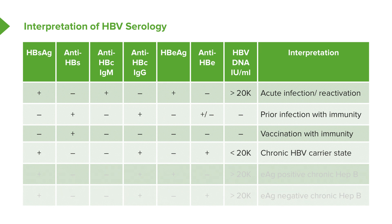For chronic HBV — the carrier patient — they will be positive for HBsAg and anti-HBc IgG. Notice you also have anti-HBe present. In a carrier state, the viral count or HBV DNA will be less than 20,000, not as high as in acute infection but still present. Your patient is in a chronic carrier state.